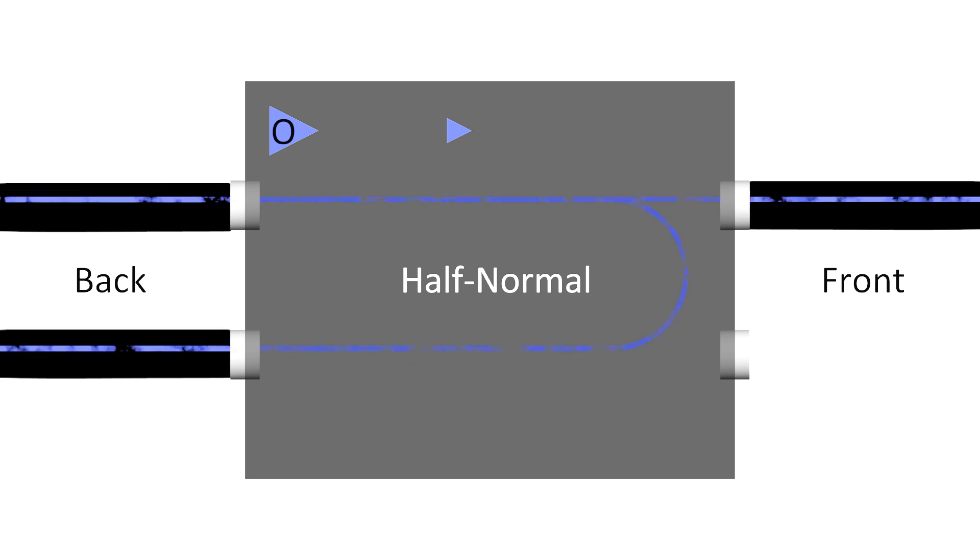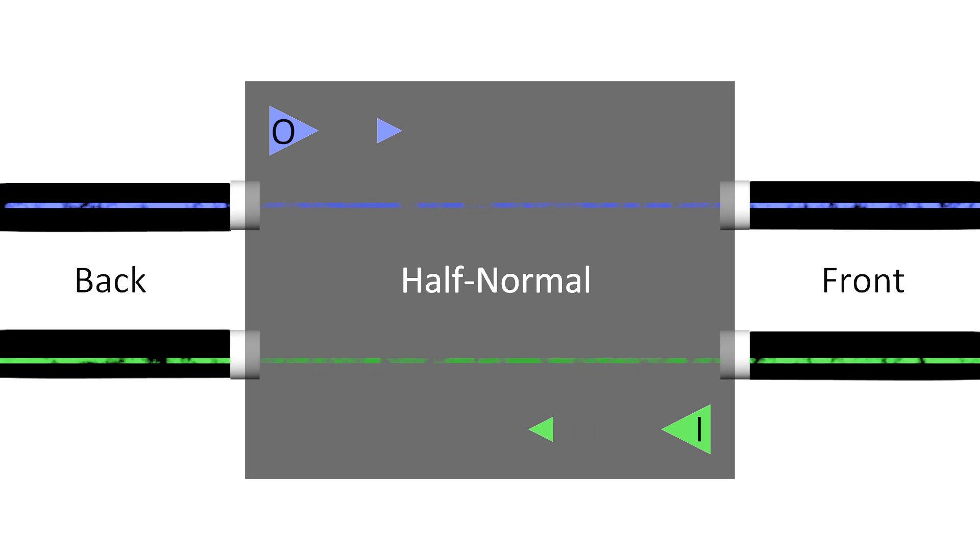Breaking the normal by inserting a patch cord into the bottom jack creates no connection between the vertical pairs of jacks. This broken normal state is maintained as long as there is a patch cord in the bottom jack. The signal can then be rerouted as required in the signal chain.